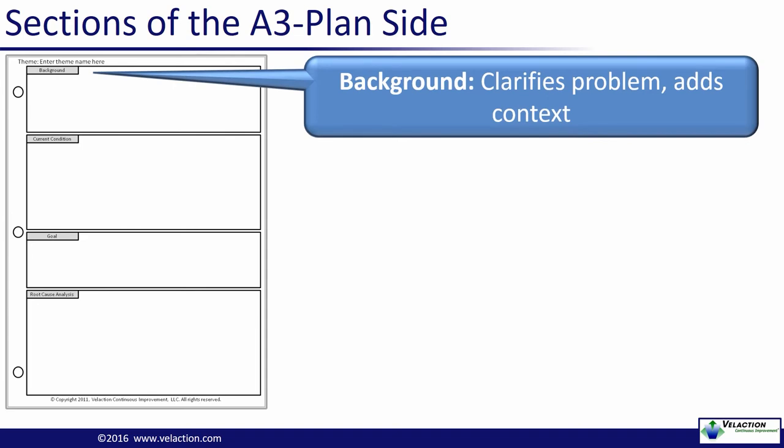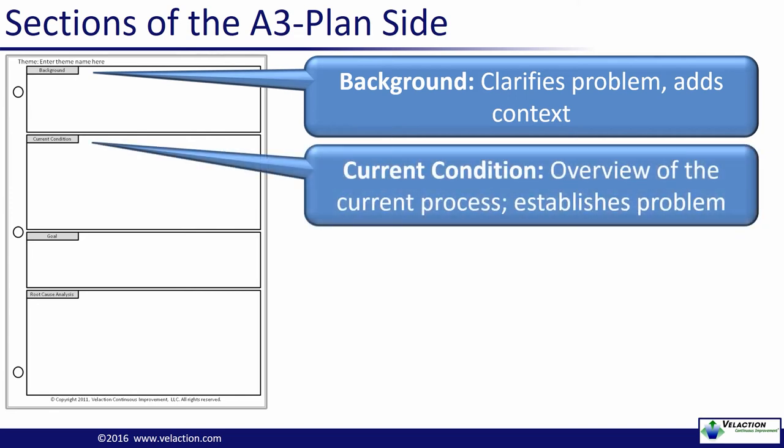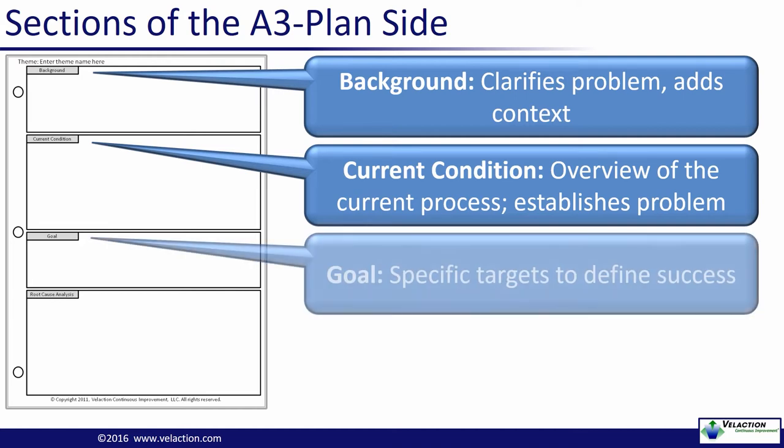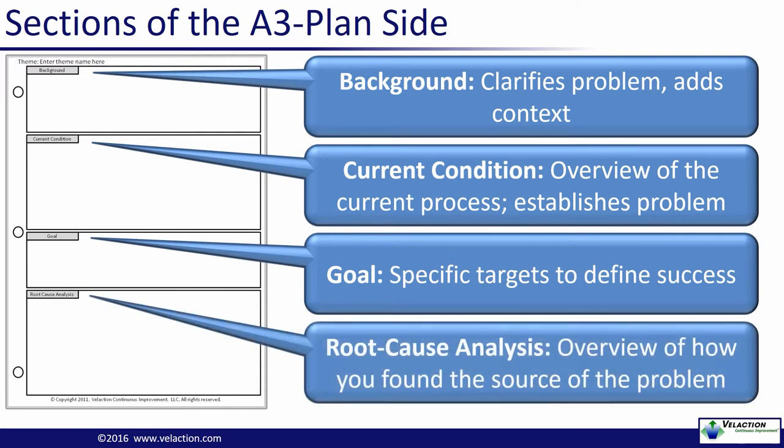The top section of the A3 is the background. It is simply an overview of what the problem is. It should address the impact of the problem and link to corporate goals if possible. The next section is the current condition. It provides more detail about the current state of the process or system and puts a little more light on what the problem really is. Of course, you can't solve a problem without clear goals. And, as I mentioned earlier, you need to do a good root cause analysis to fully understand the problem so you don't end up treating symptoms.